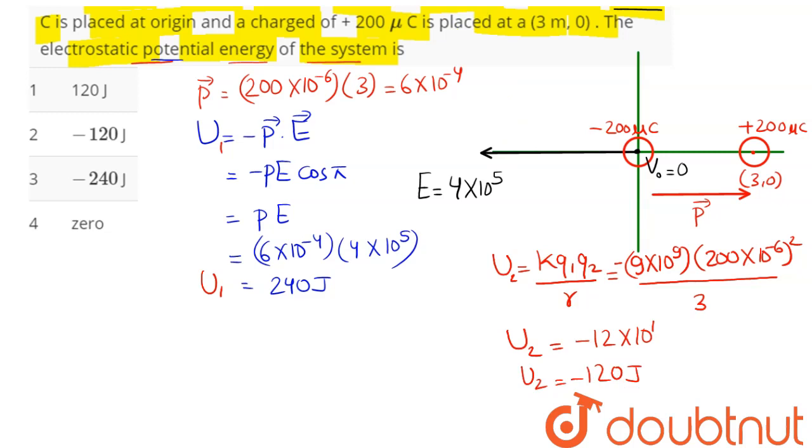Hence, we can say the net electric potential energy of the system which is the sum of U1 and U2, that is U1 plus U2, can be written as 240 minus 120. Hence this comes as plus 120 joule. Hence 120 joule means option number 1 is the correct answer.